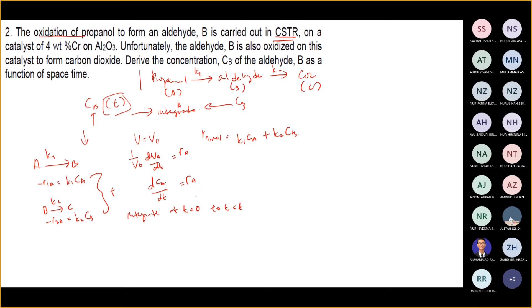We look at species A first. So dCA/dT = negative K1·CA plus K2·CB. In this case, at T=0, CB has not yet formed, so we can omit it.